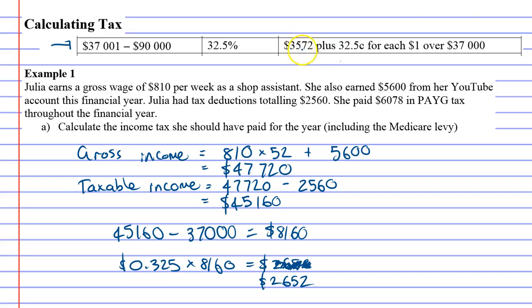That's not everything, because it says she also needs to pay three thousand five hundred and seventy-two dollars plus that amount. So we add them together: three thousand five hundred and seventy-two plus two thousand six hundred and fifty-two equals six thousand two hundred and twenty-four dollars. That is how much tax she has to pay for that year.